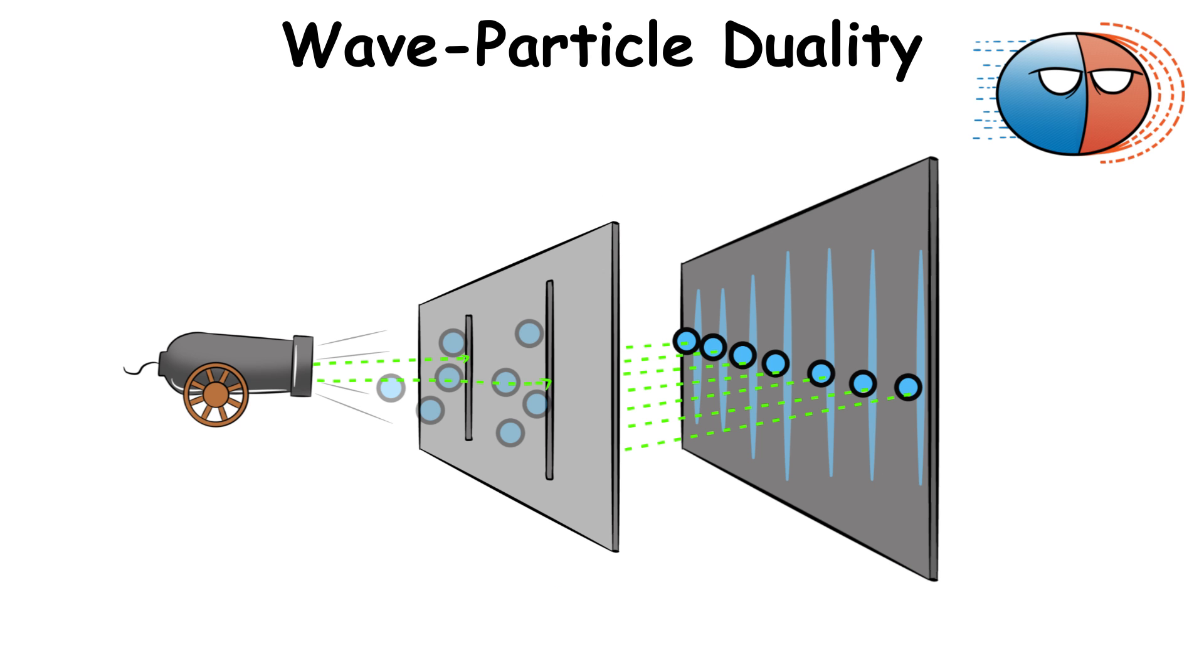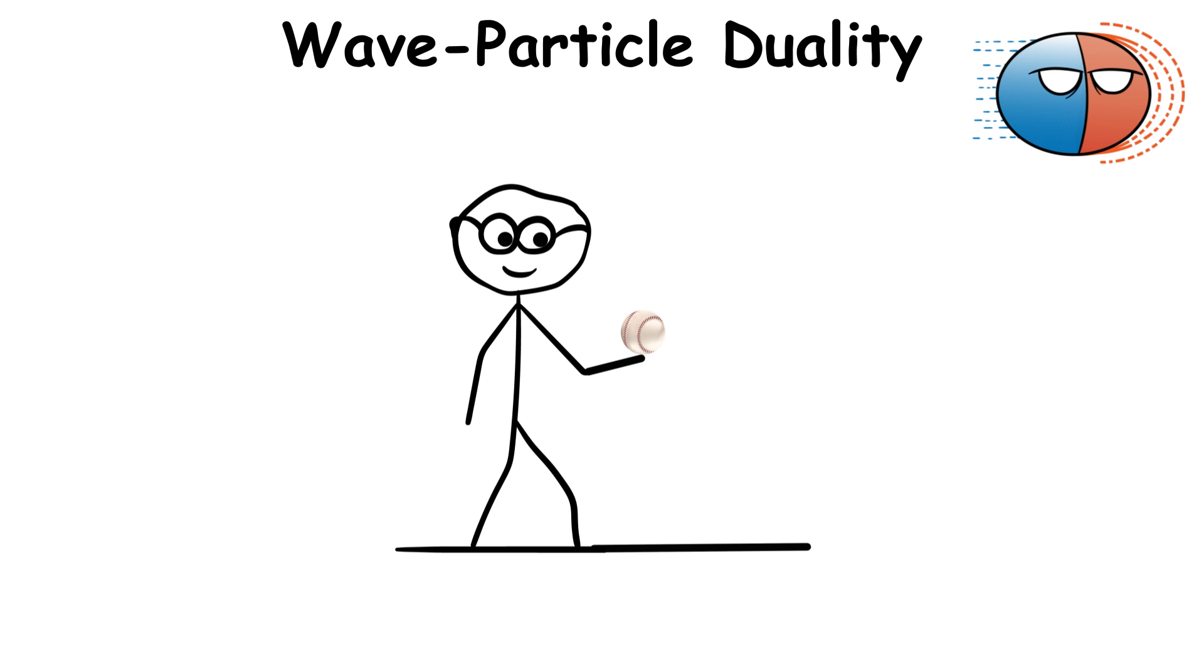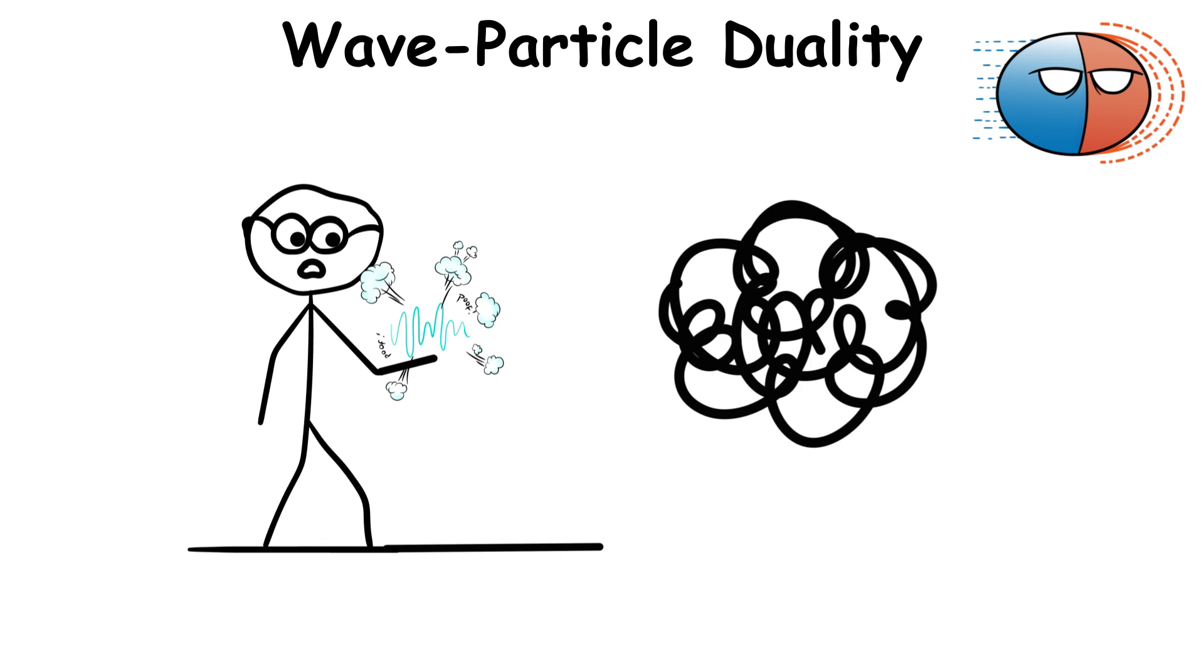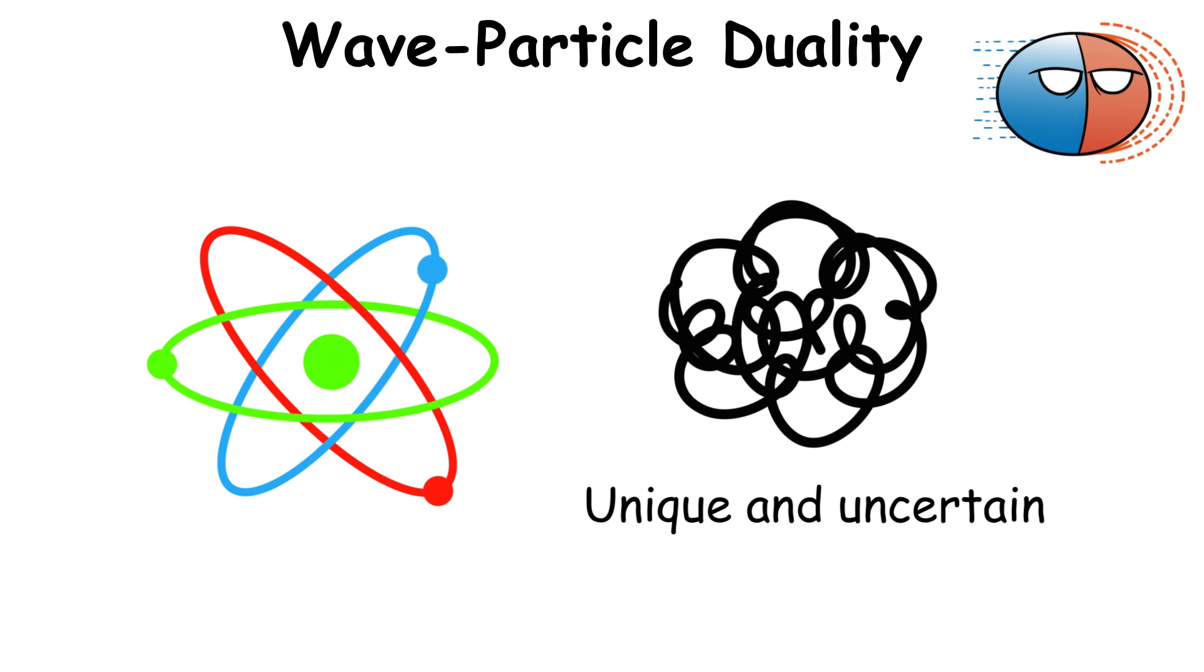Experiments like the double slit experiment showcase this duality, but it's not as if the baseball in your hand can suddenly turn into a wave. It's much more complex than that, and rooted in the unique and uncertain aspects of the quantum world.